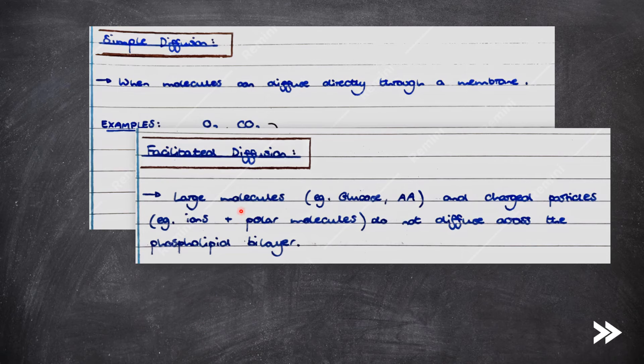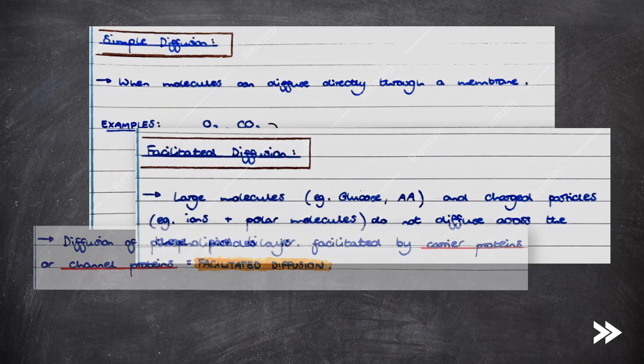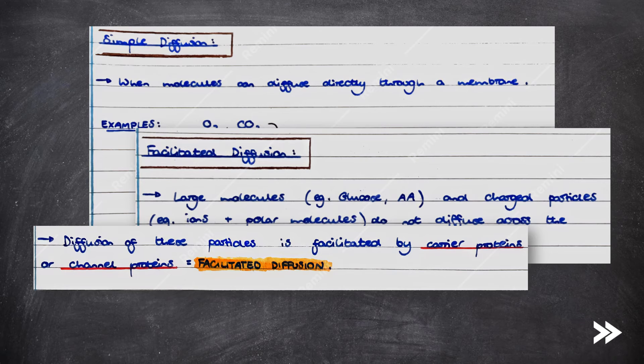Then we have facilitated diffusion, which is for large molecules such as glucose and amino acids and charged particles such as ions and polar molecules, which cannot diffuse directly across the phospholipid bilayer. Diffusion of these particles is facilitated by carrier proteins or channel proteins.